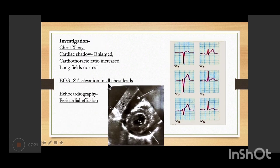On investigations, the chest X-ray shows an enlarged cardiac shadow with an increased cardiothoracic ratio, while lung fields are normal. An enlarged cardiac shadow indicates either dilated cardiomyopathy or something around the normal cardiac shadow. Notably, hypertrophic heart does not typically show an enlarged cardiac shadow on X-ray.